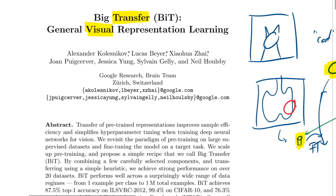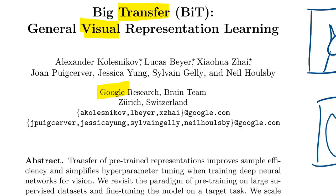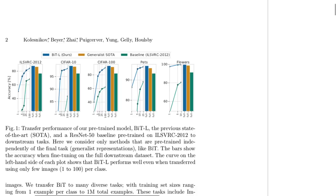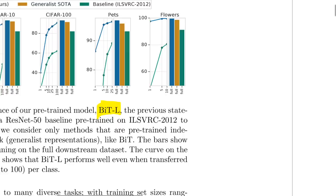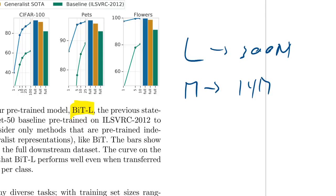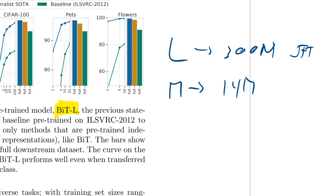No better place to do this than Google — they certainly have giant databases of images and lots of computation, which we're going to see is very necessary. They train three different models called BIT: small, medium, and large. The L model is trained on 300 million images — the JFT dataset. The medium model is trained on 14 million images — the ImageNet 21k dataset. And the small model is simply trained on the 1.3 million ImageNet dataset.